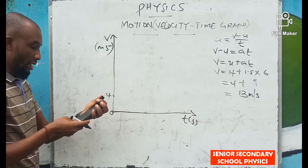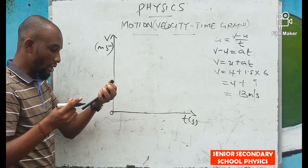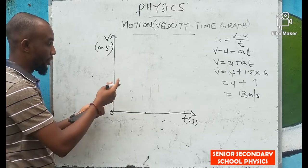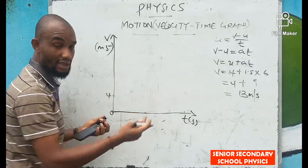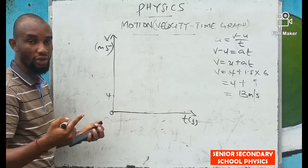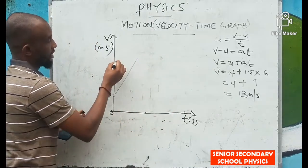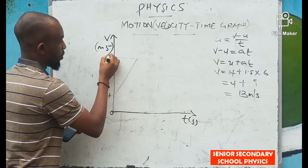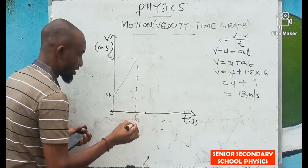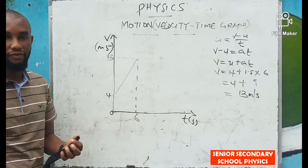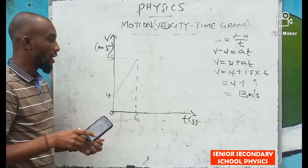So the body accelerates from 4 to 13 meters per second over 6 seconds. We now plot this on the graph: the velocity goes from 4 at time zero up to 13 at time 6 seconds. That gives us our velocity-time graph — a straight line rising from 4 to 13.